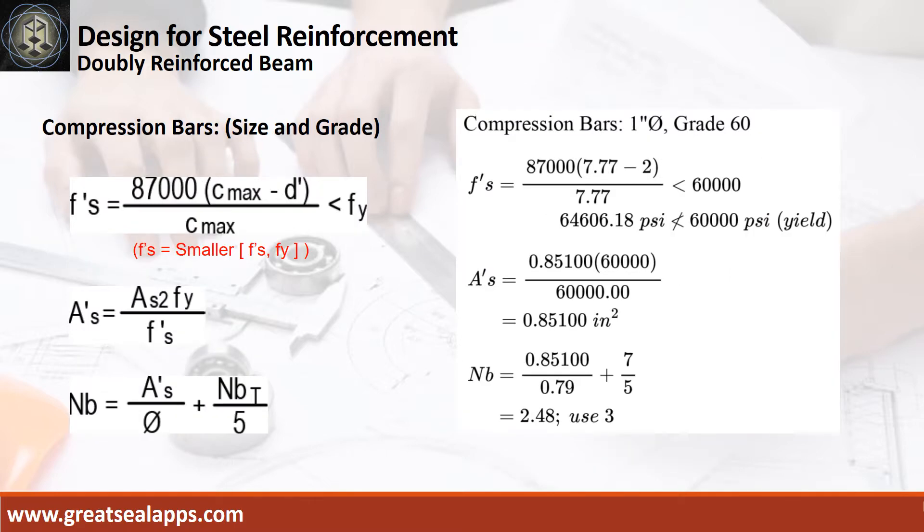The stress of compression bars, AS2 equals 64,606.18 PSI. Use 60,000 PSI. For AS prime equals 0.851 square inch, and the number of compression bars for 1 inch diameter is 3.